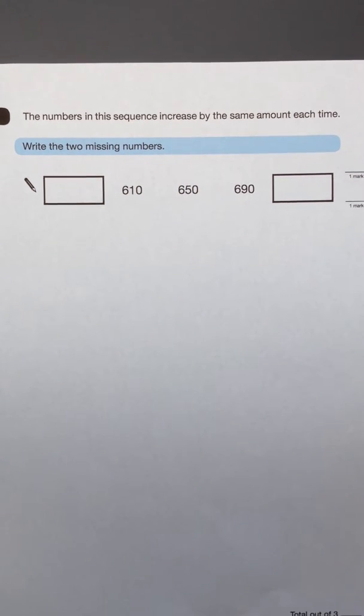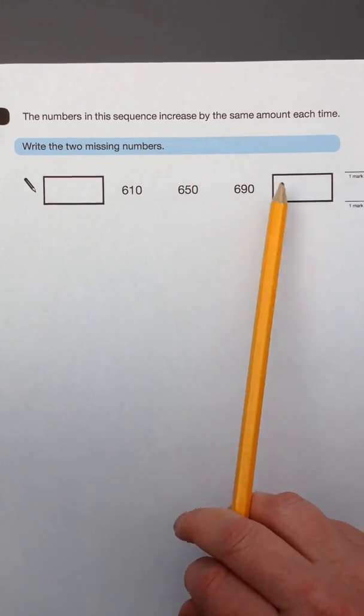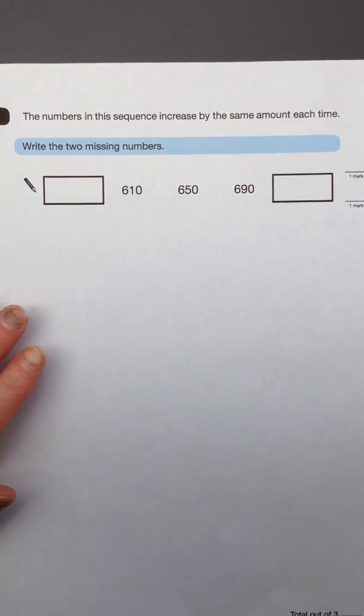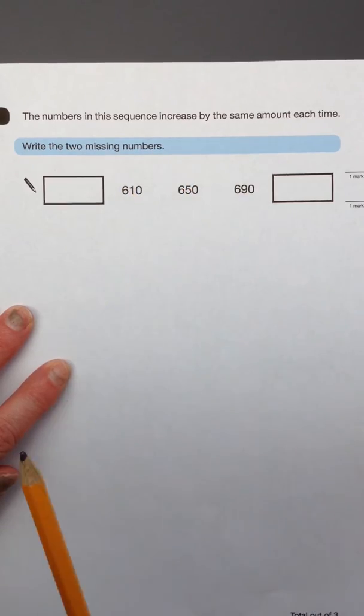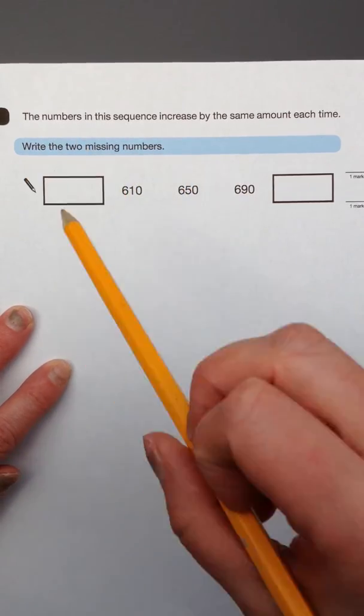Write the two missing numbers. You can see that there are two boxes that you need to write the missing numbers in. So the first thing to do is check which numbers are already present in the sequence and work out what the difference is.